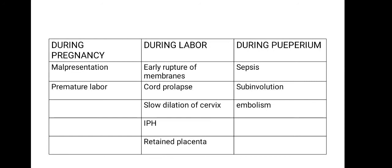During labor, maternal complications include early rupture of membranes, cord prolapse, slow dilation of the cervix because the placenta is occupying the space, and intrapartum hemorrhage. Sometimes small bits of retained placenta may lead to postpartum hemorrhage (PPH). During the puerperium, sepsis can occur due to operative interference from C-section. Sub-involution — failure of the pregnant uterus to return to its non-pregnant state after delivery — and embolism are also maternal complications.